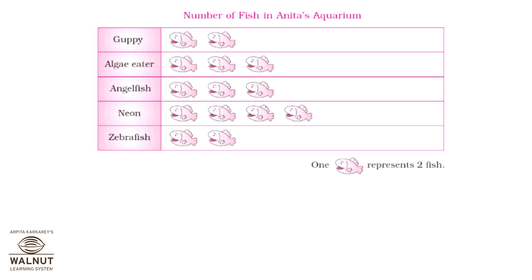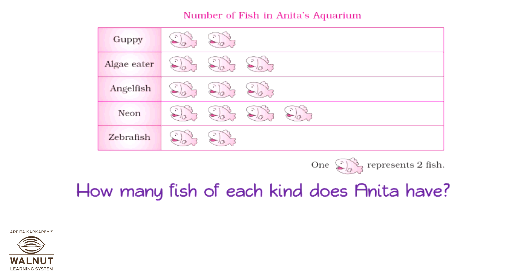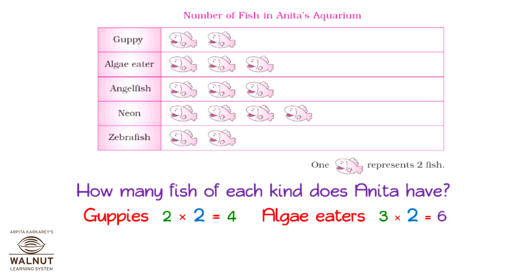Let's now find out the number of fish in Anita's aquarium. The picture of one fish represents two fish. There are two pictures in front of guppies, so two into two is equal to four. For algae eaters, there are three pictures, so three into two is equal to six. For angel fish, there are also three pictures, so three into two is equal to six.